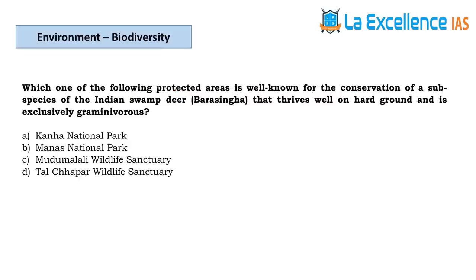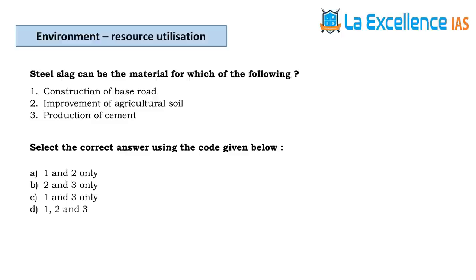The next question is tricky. Many students marked Manas National Park thinking swamp deer lives in swampy areas like Assam. But remember — Barasingha or swamp deer is the national animal of Madhya Pradesh. When it is the national animal of Madhya Pradesh, the relevant national park there is Kanha National Park.